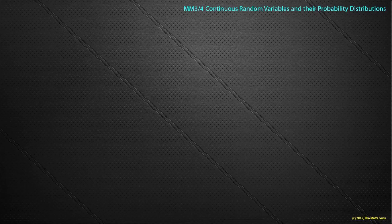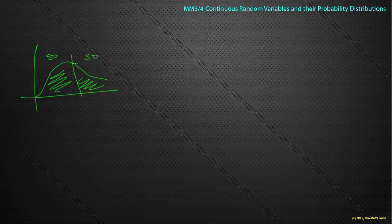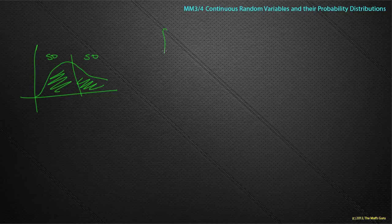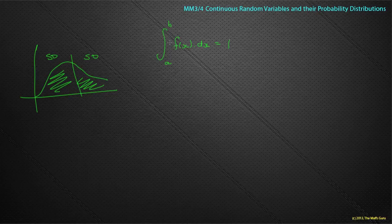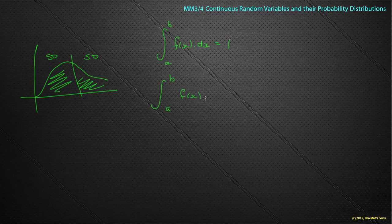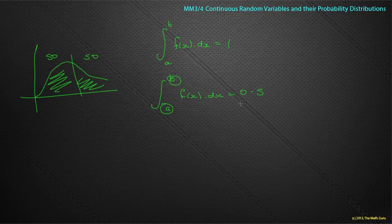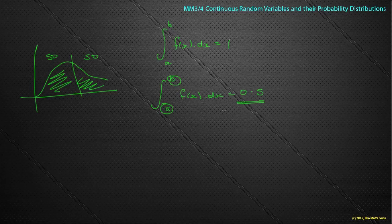We've already thought about the median. The bell curve suggests half of values lie in each half. We know the integral of f(x) dx equals 1 over the full range. To find the median, we look for a value m such that the integral of f(x) dx from a to m equals 0.5 — that's how you find where 50% of the data lies.